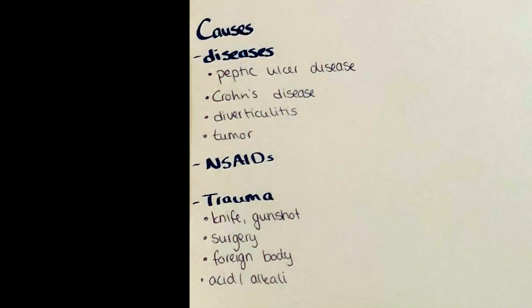The lifelong chance for a patient with Crohn's disease is about 1–3% that he or she will develop a bowel perforation. Non-steroidal anti-inflammatory drugs, such as aspirin, also promote the thinning and breaking of the intestinal wall integrity.